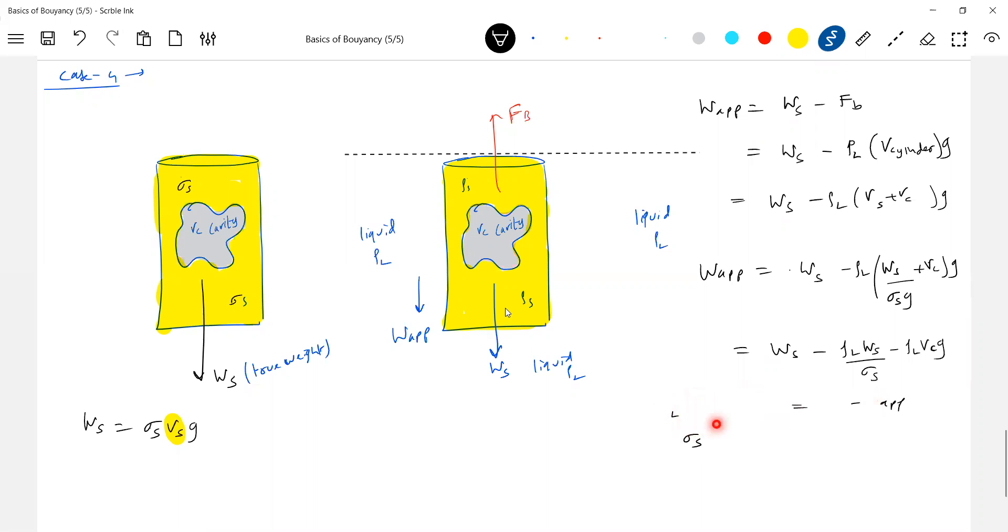It's only volume of cavity is needed, so I'll readjust. Rho l Vc g is equal to Ws minus W apparent, rho l Ws over sigma s. What is the volume of cavity? Ws by rho l by g. Rho l gets canceled, so this will be Ws over sigma s.